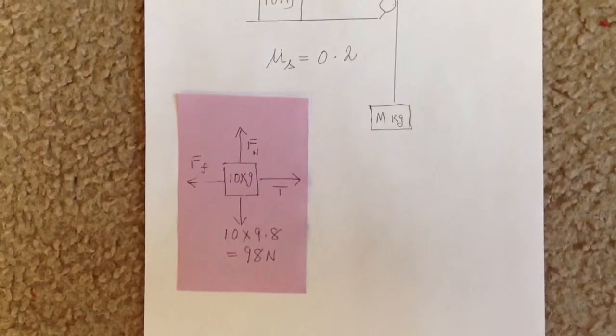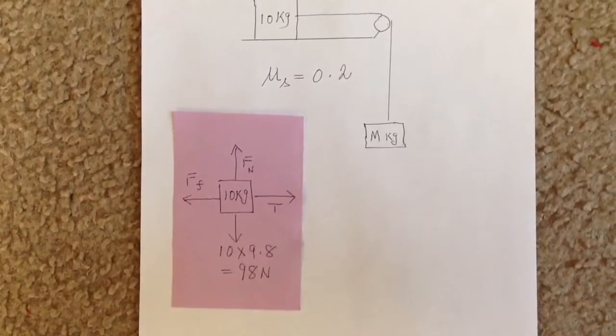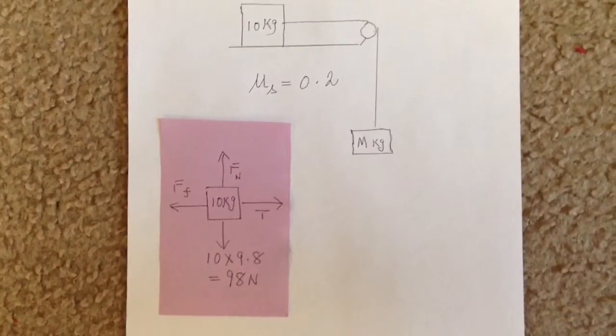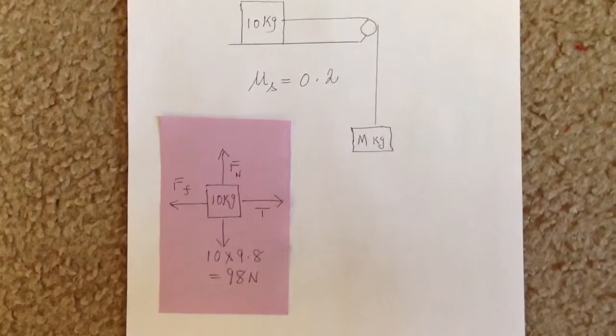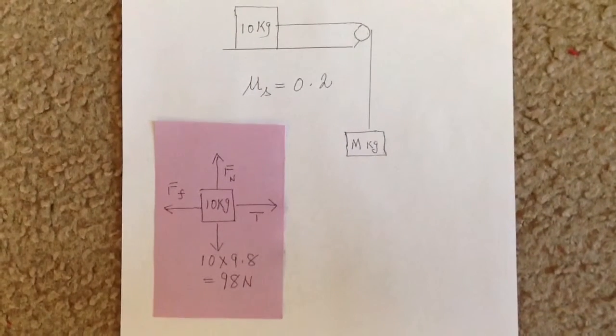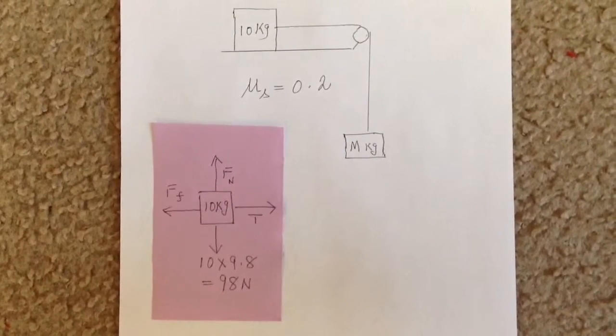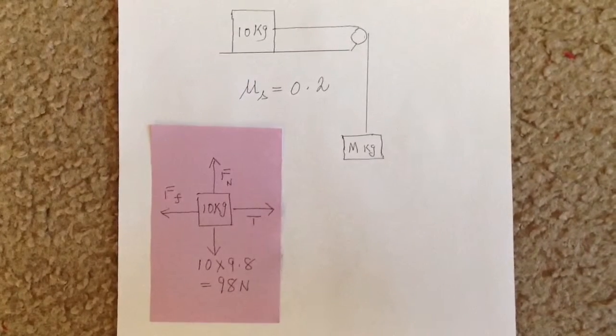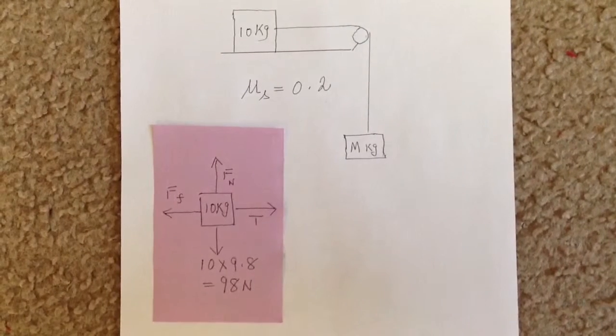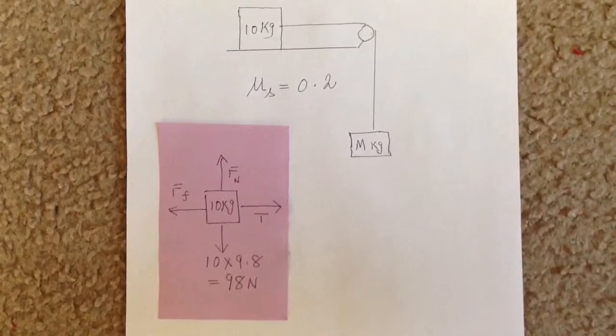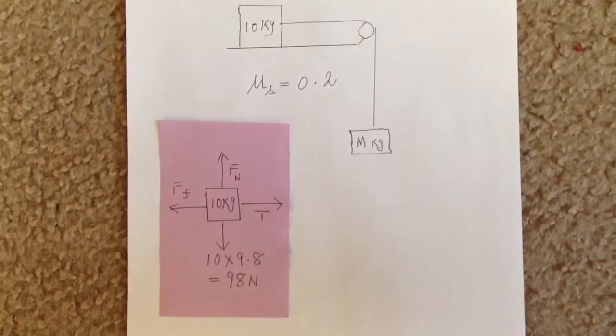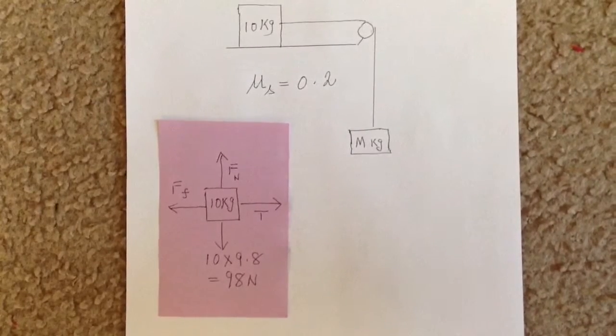Let's take a look at the 10 kg mass. What are the forces acting on this object? We got tension acting to the right. We have the force of friction acting in the opposite direction. We have the force of gravity pushing the object down with a force of 10 times 9.8 or 98 newtons. And an equal force, the normal force, is acting in the upward direction.